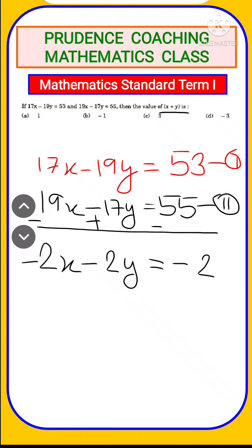Let's solve. Take -2 as a common factor, so you get -2(x + y) = -2.